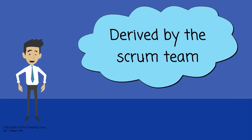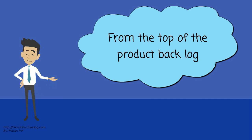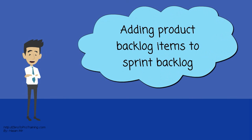The list is derived by the scrum team, selecting Product Backlog items from the top of the product backlog until the development team feels it has enough work to fill the Sprint. This is done by the development team asking, can we also do this? And adding Product Backlog items to the Sprint Backlog.